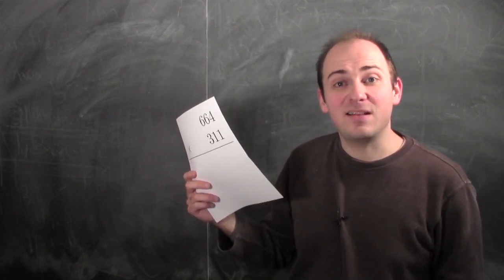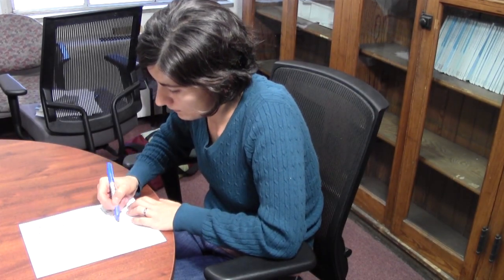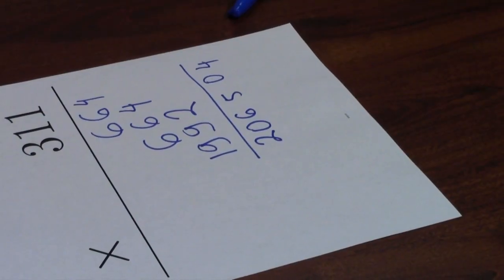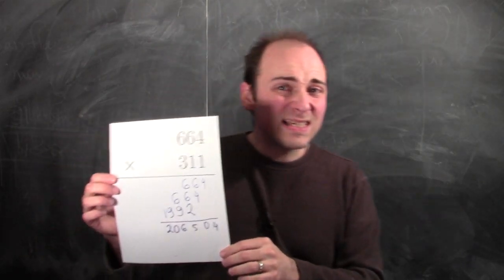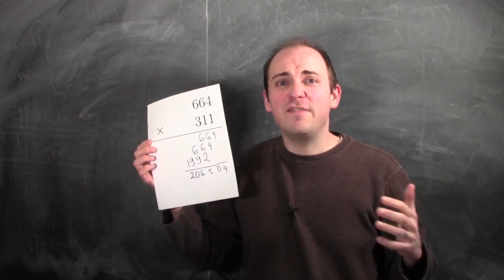Let's give this to somebody else. Hi, my name is Vedrana. So, 664 times 311 is 206,504.